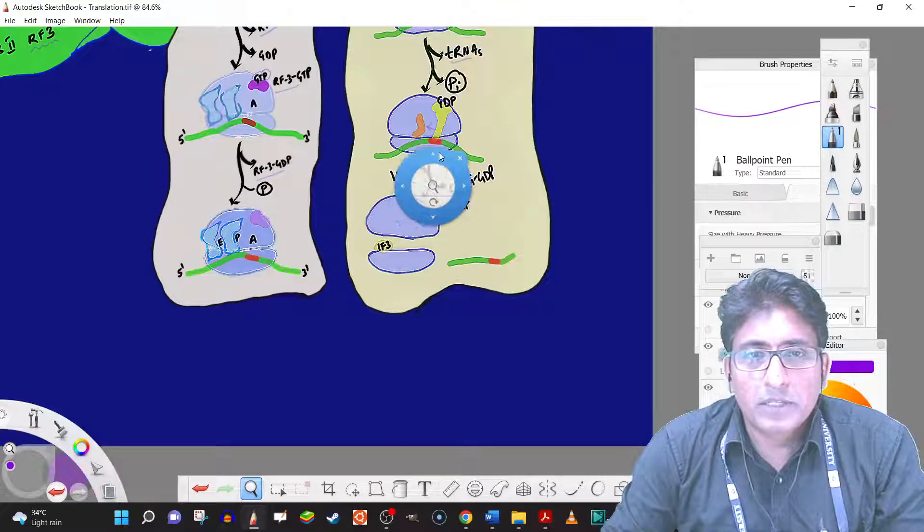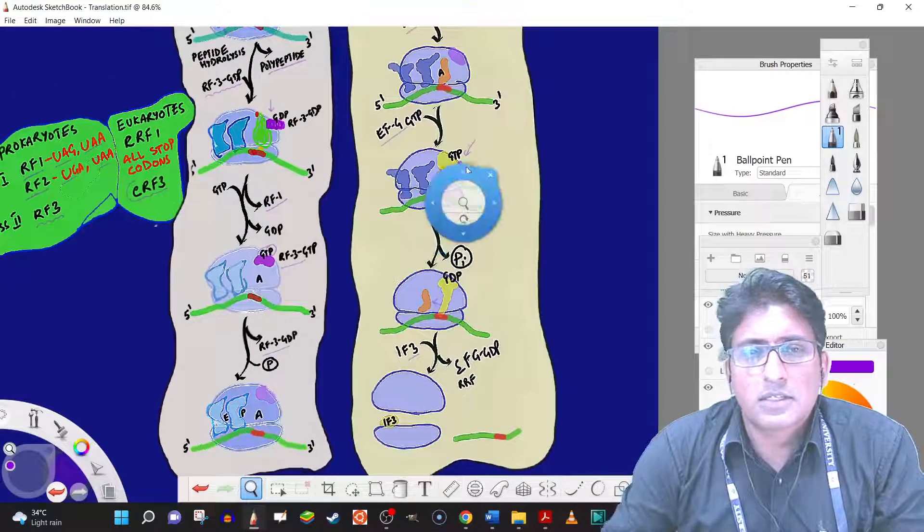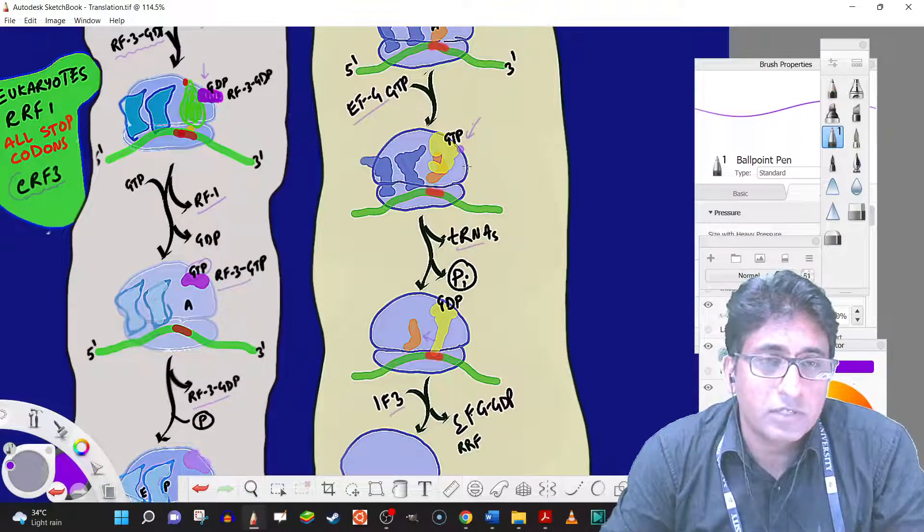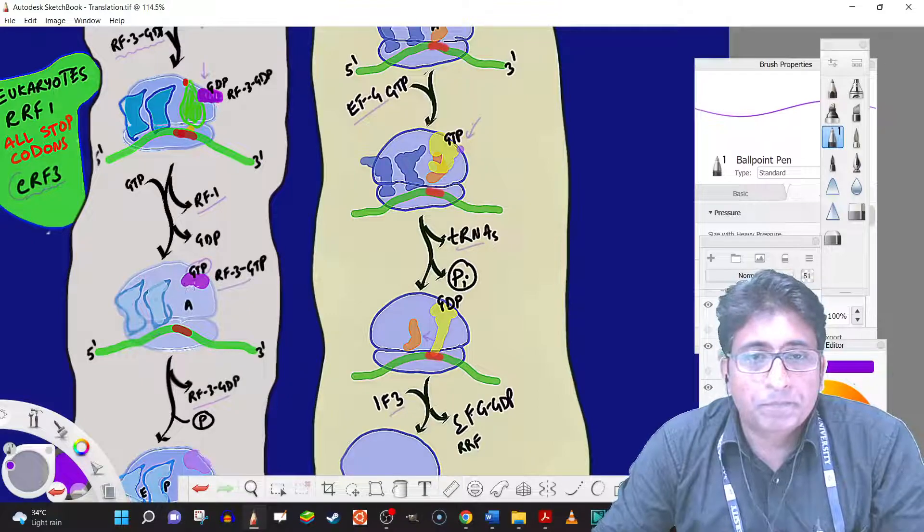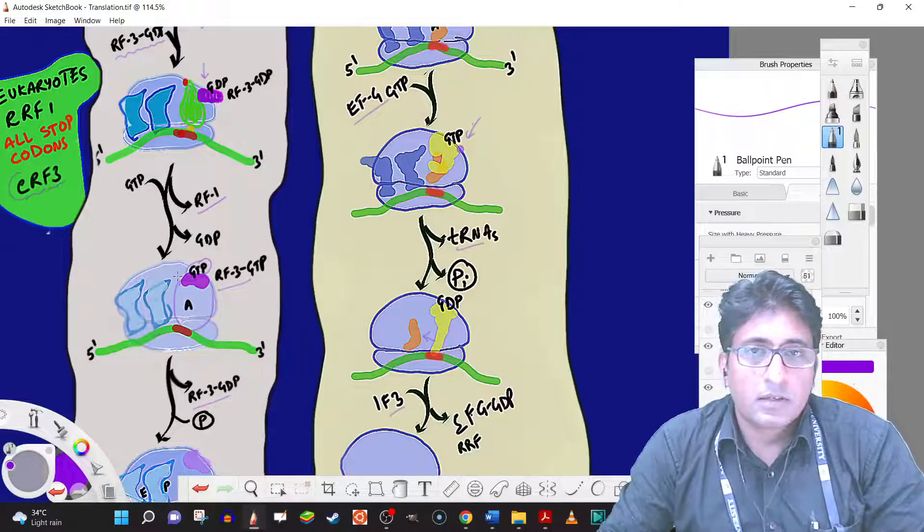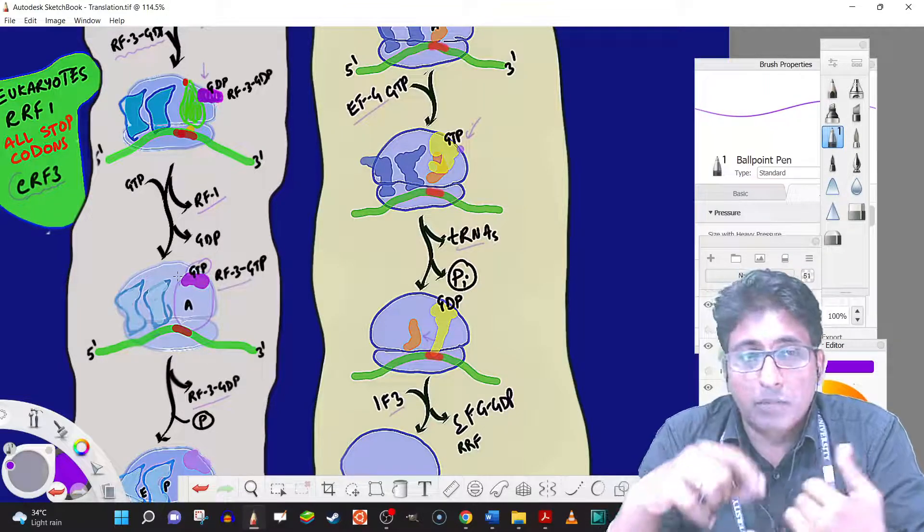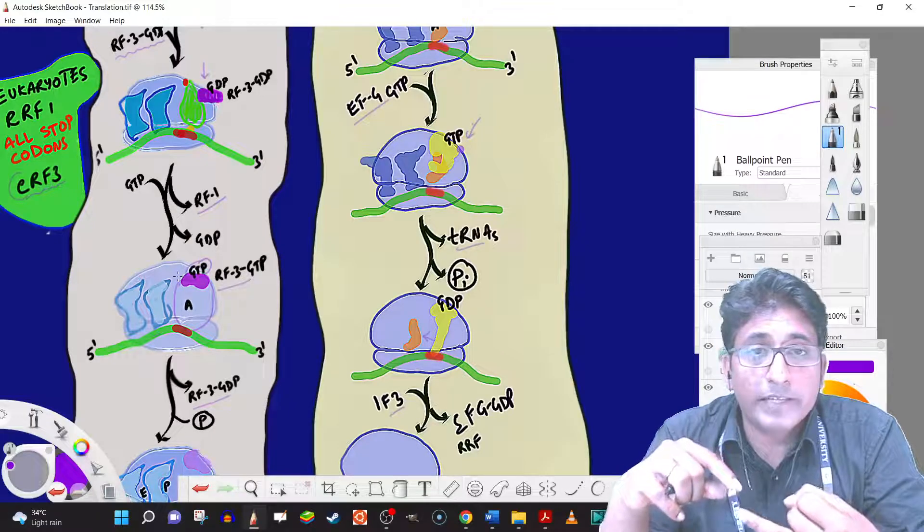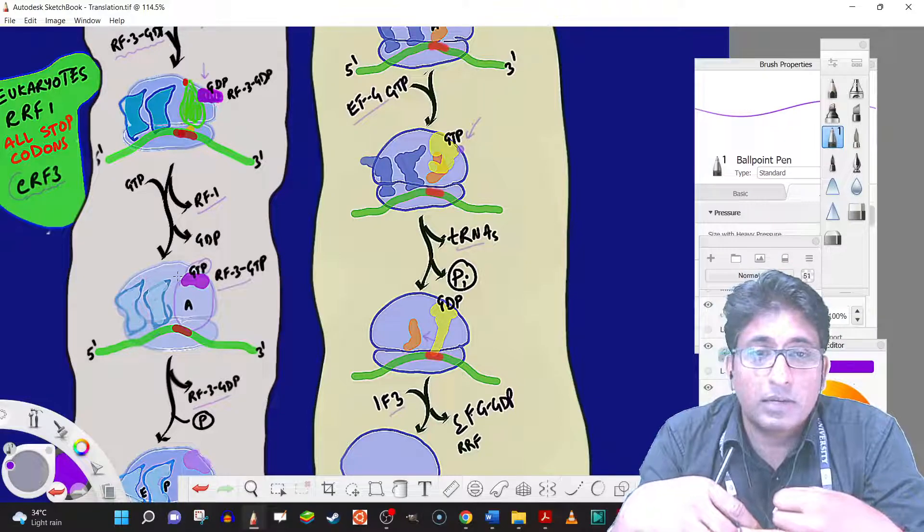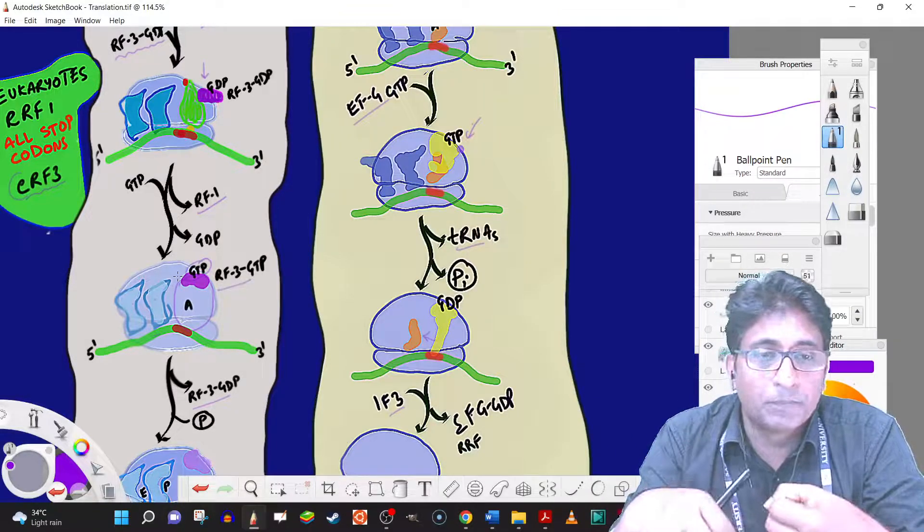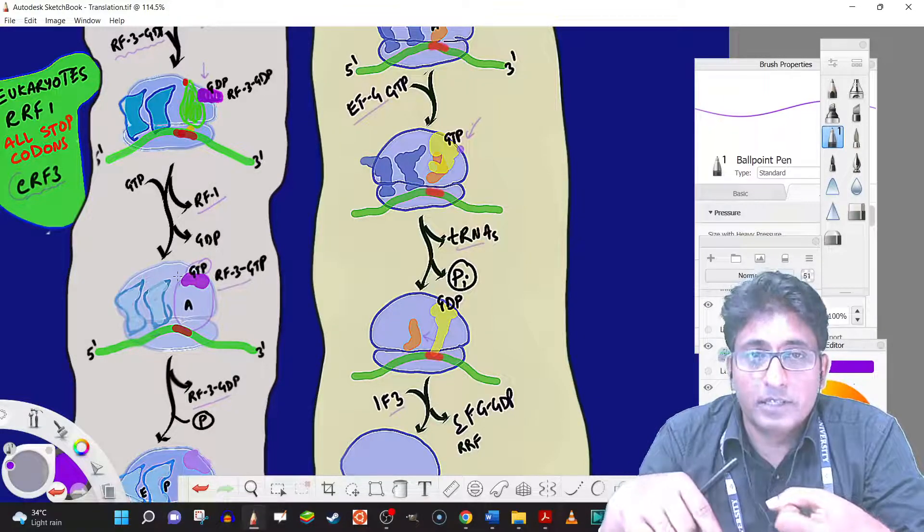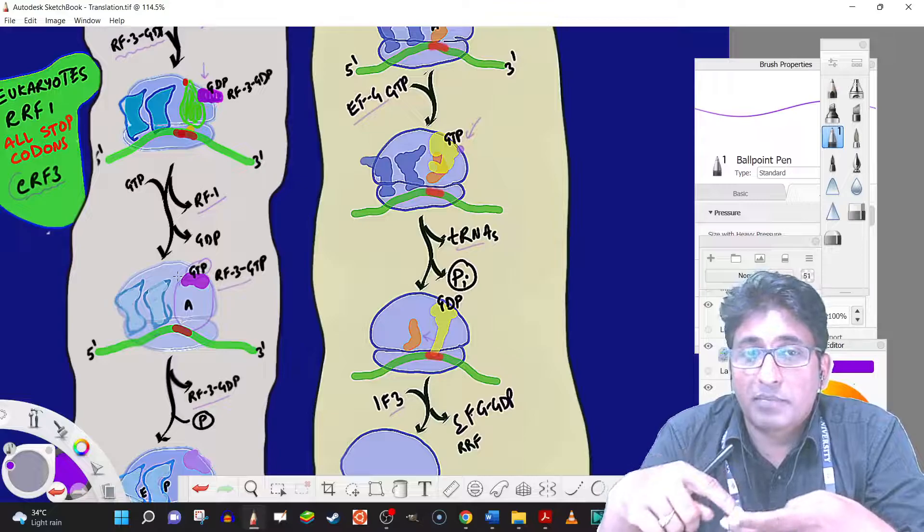What we should appreciate here is there is a certain degree of molecular mimicry between all the proteins that we have discussed. Say for example in this particular A site, there is an empty A site. We have tRNAs come and bind to it. We also have EF-G which is responsible for the translocation reaction to happen or the movement of the mRNA. We also have the release factors binding into the A site. We also have ribosome release factor binding to it.